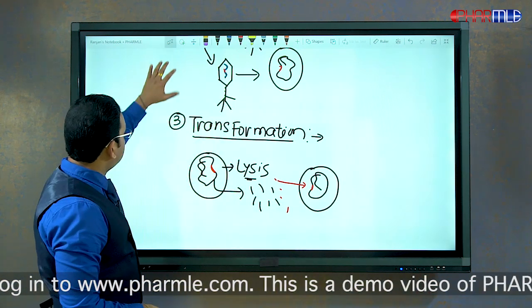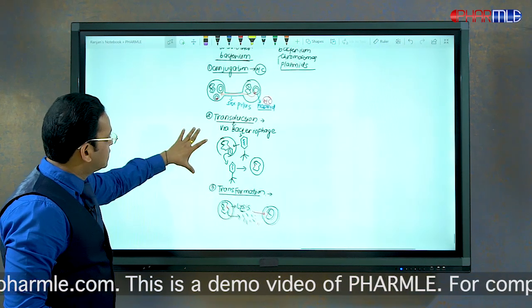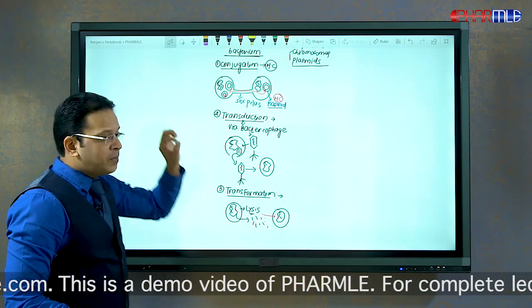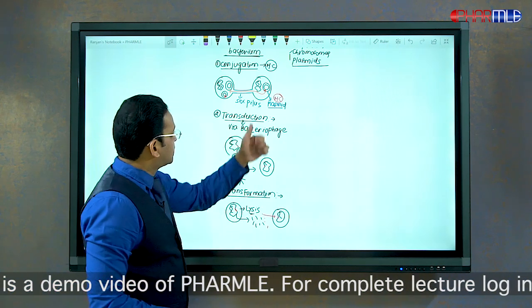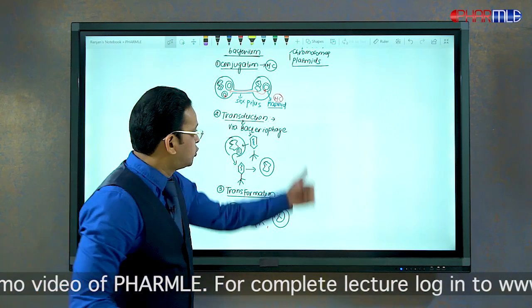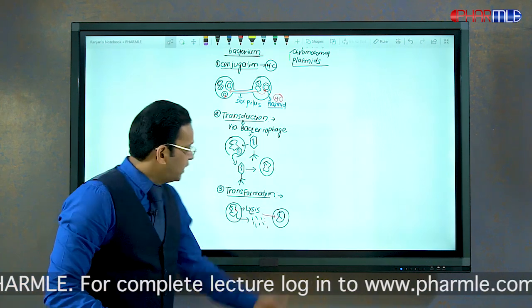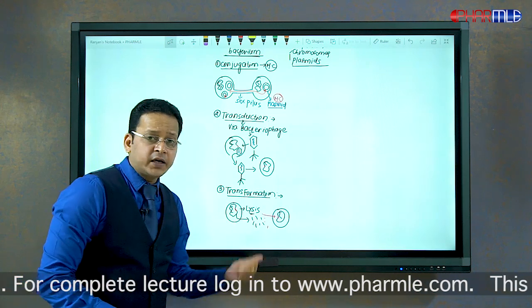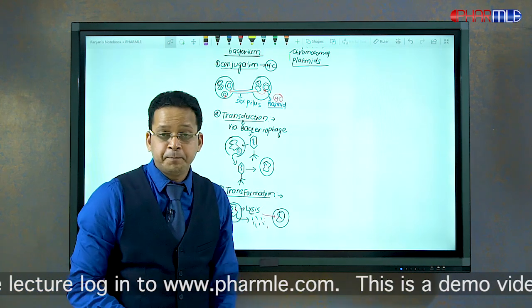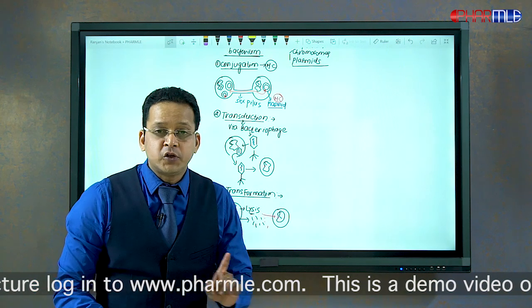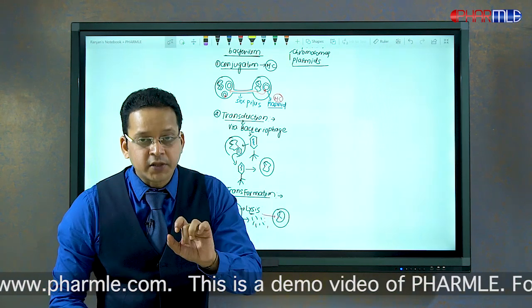These are the three mechanisms of resistance transfer from one bacterium to another: conjugation via a sex pilus through a plasmid, transduction via a bacteriophage, and transformation directly due to lysis of one bacterium and uptake by another.